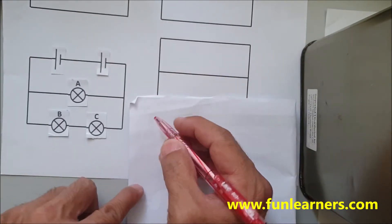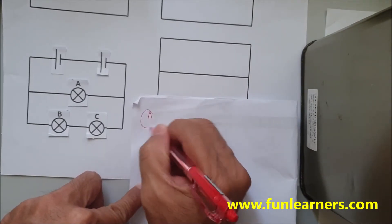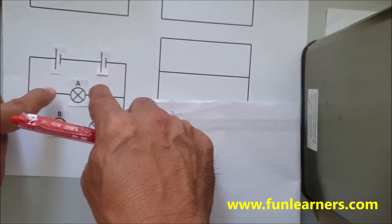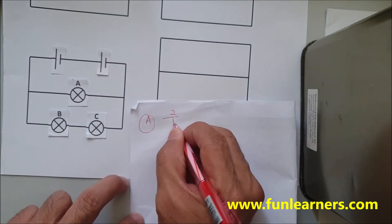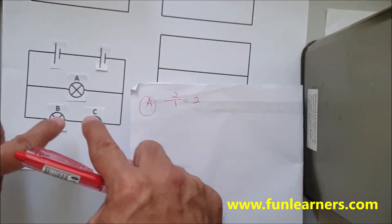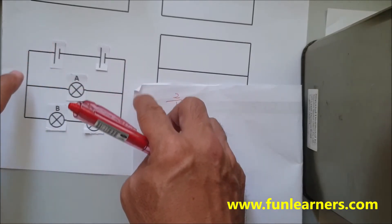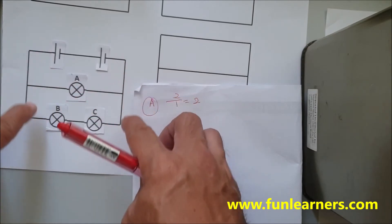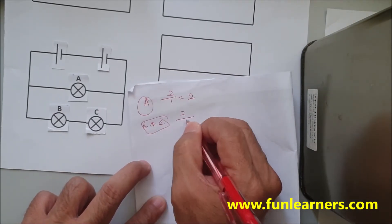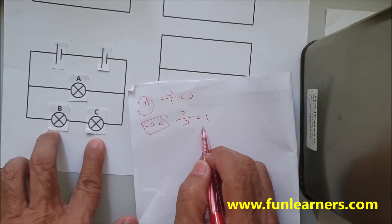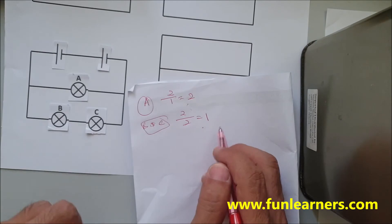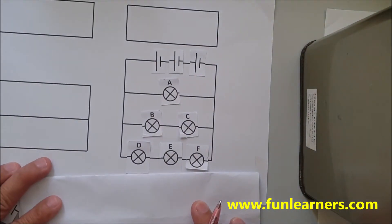There are two batteries. This path only has A, so it's two divided by one — the brightness of A is two. For the other path, these two batteries also connect to light bulbs B and C, so two batteries divided by two light bulbs gives one. B and C have the same brightness of one. So A is brighter than B and C.